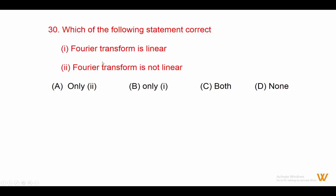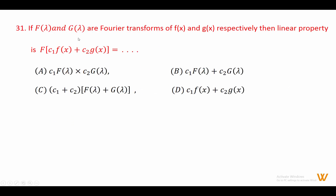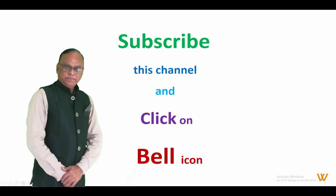Thirty: which statement is correct? First: Fourier transform is linear. Second: Fourier transform is not linear. Only the first statement is true — Fourier transform is linear. Answer is option B. Thirty-one: the linear property states that the Fourier transform of c1 fx plus c2 gx equals c1 F(lambda) plus c2 G(lambda). Answer is option B. Dear friend, subscribe this channel and click on the bell icon. Thank you.